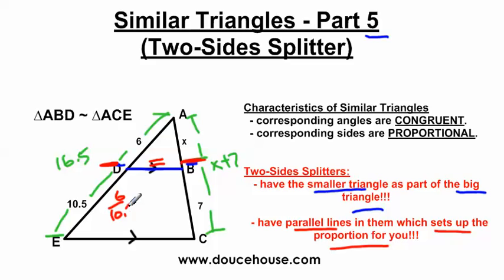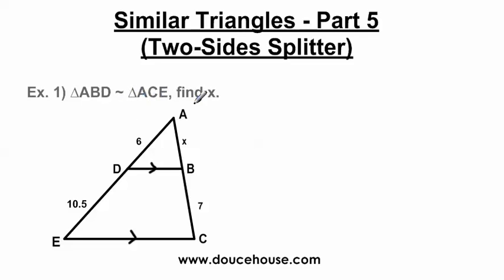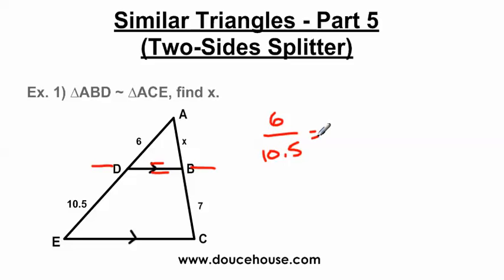I've got videos called Parallel Lines and Proportional Parts you can watch to understand that concept. Basically, since this line is parallel to this one, this side is proportional to the sides being cut. So I can set up the proportion: 6 over 10.5 equals x over 7. This line cutting through the triangle is parallel to the line down here, so it cuts these sides proportionally. I'm going to start solving this problem. Triangle ABD is similar to Triangle ACE — find X. My goal is to find this segment. Since I have parallel lines, they cut these opposite sides into proportional parts.